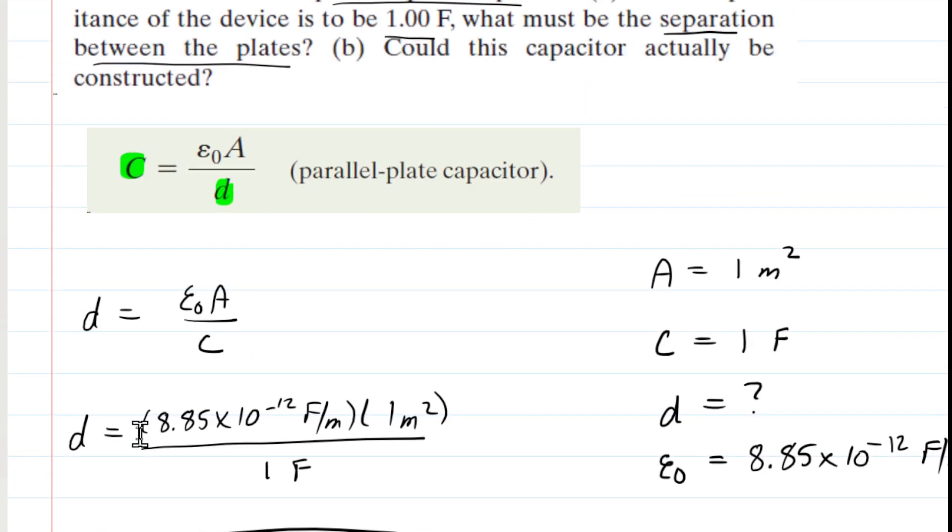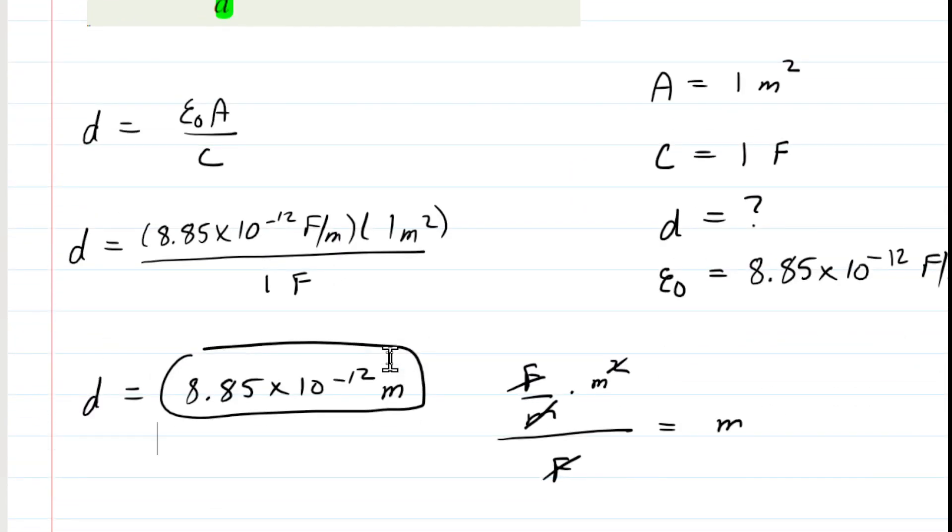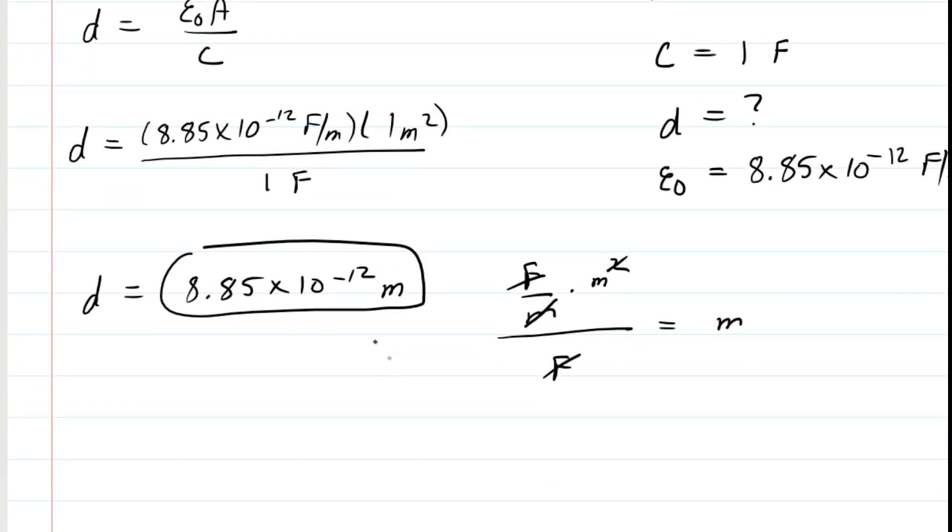Part B is asking us, could this capacitor actually be constructed? Sort of a strange question, given the fact that d is very small. In fact, it's smaller than the typical size of an atom. And so no, we can't really construct a parallel plate capacitor that is smaller than an atom. That would be the correct answer for part B.